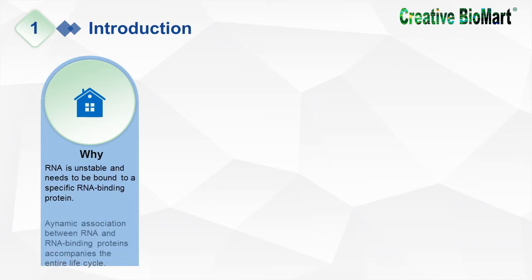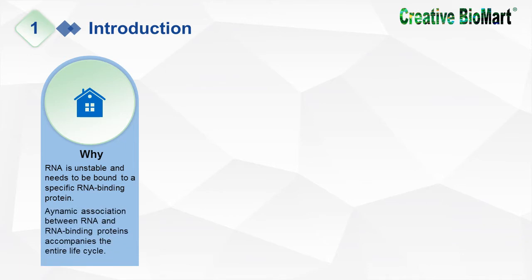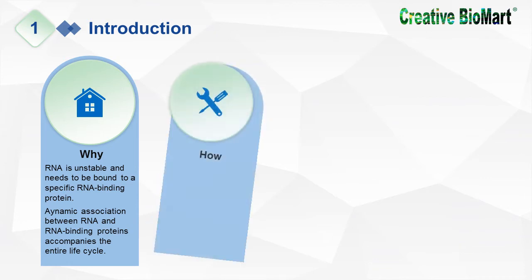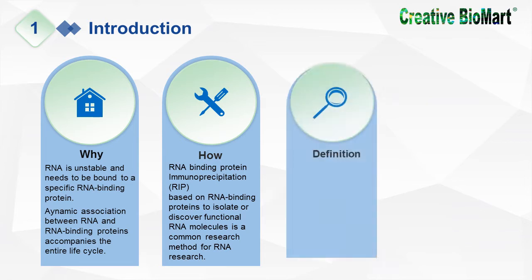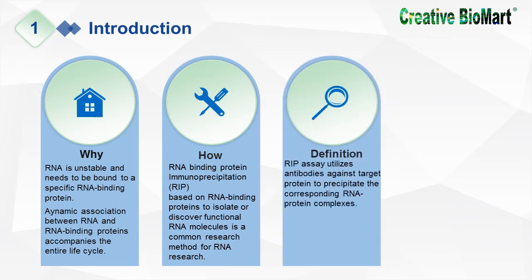Dynamic association between RNA and RNA-binding proteins accompanies the entire life cycle. RNA-binding protein immunoprecipitation (RIP), based on RNA-binding proteins to isolate or discover functional RNA molecules, is a common research method for RNA research.